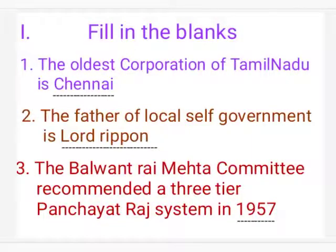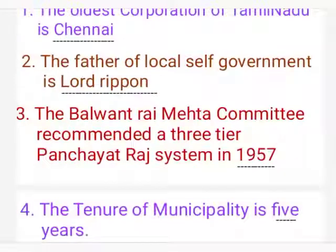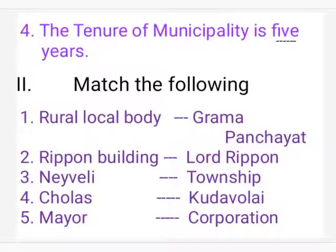Now we learn by filling the blanks. Dear students, this is a revision of what we have already studied. First: the oldest corporation of Tamil Nadu is Chennai. Second: the father of local self-government is Lord Ripon. Third: the Balwantrai Mehta Committee recommended a 3-tier Panchayati Raj system in 1957. Fourth: the tenure of municipality is 5 years.